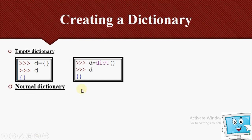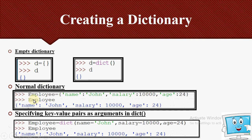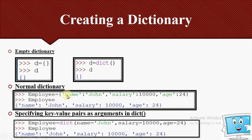The second method is creating a normal dictionary. For example, the variable 'employee' starts with curly braces containing: 'name': 'John' as the first key-value pair, 'salary': 10000 as the second, and 'age': 24 as the third. This creates a dictionary with three key-value pairs. When printed, it shows as-is. String values should be enclosed in double or single quotes.